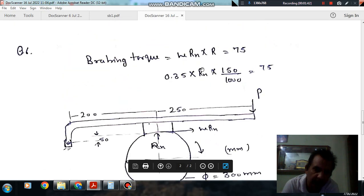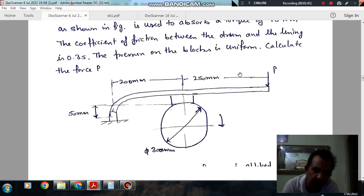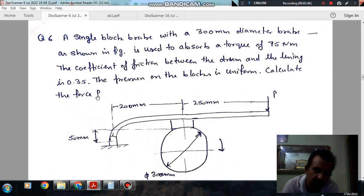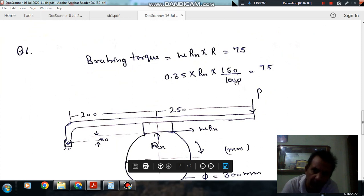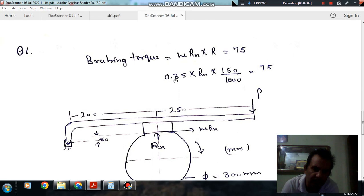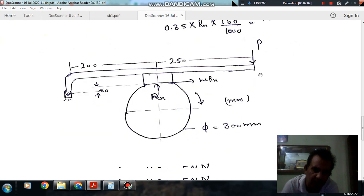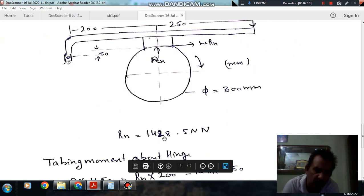Now the braking torque is 75 Nm, which equals μRn × R, where R is the radius of the drum. So R is 150/1000 meters. That is why we have converted R to meters. μ is given as 0.35, so Rn comes out to 1428.5 N.